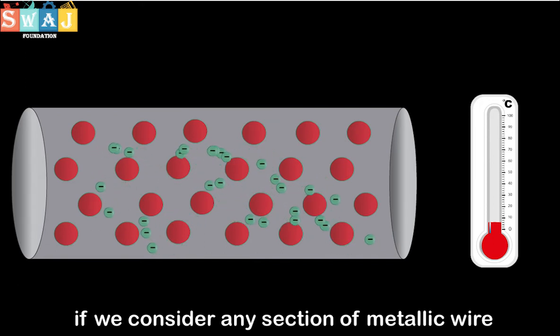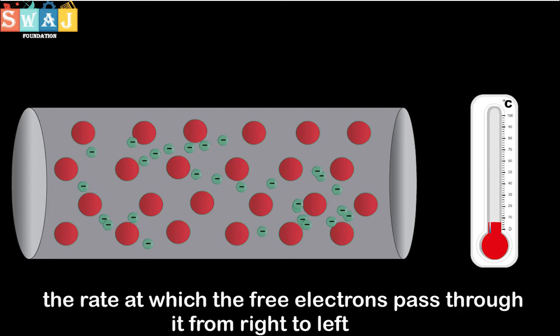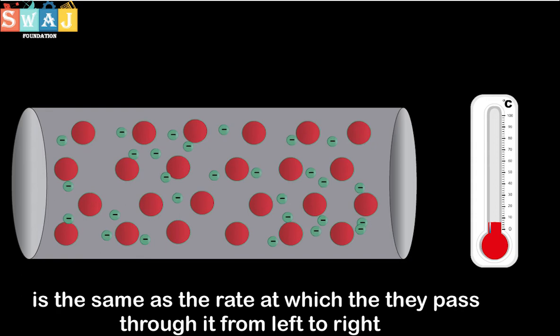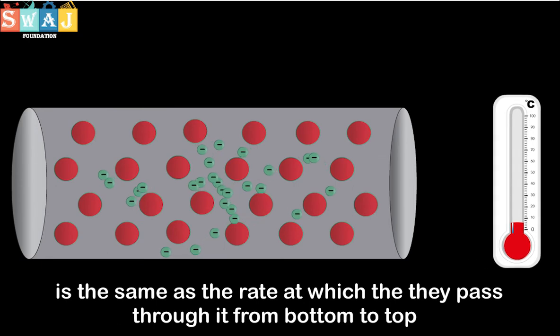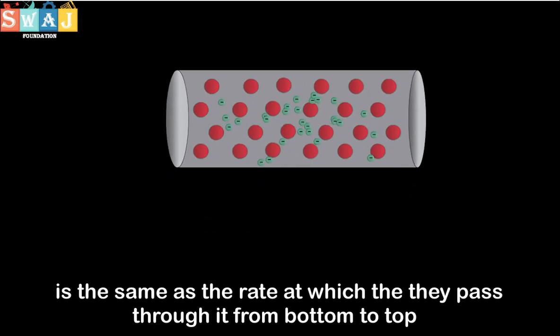If we consider any section of metallic wire, the rate at which free electrons pass through it from right to left is the same as the rate at which they pass from left to right. Similarly, the rate at which free electrons pass from top to bottom is the same as the rate at which they pass from bottom to top.